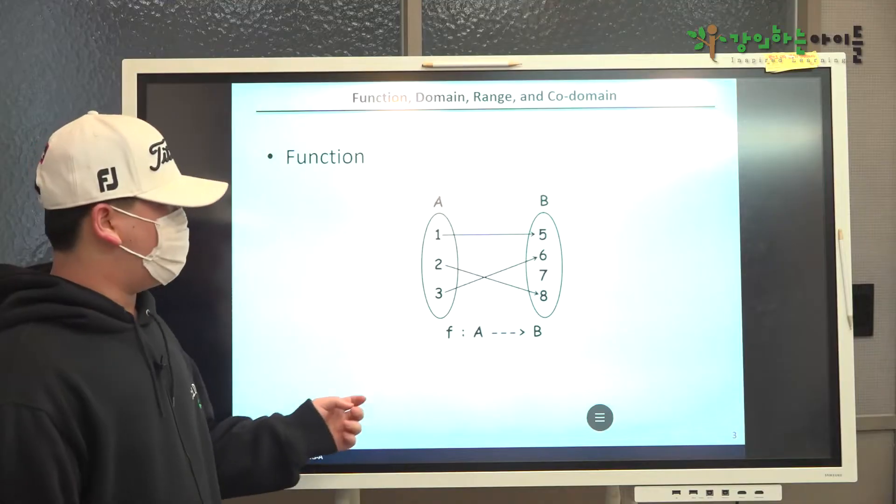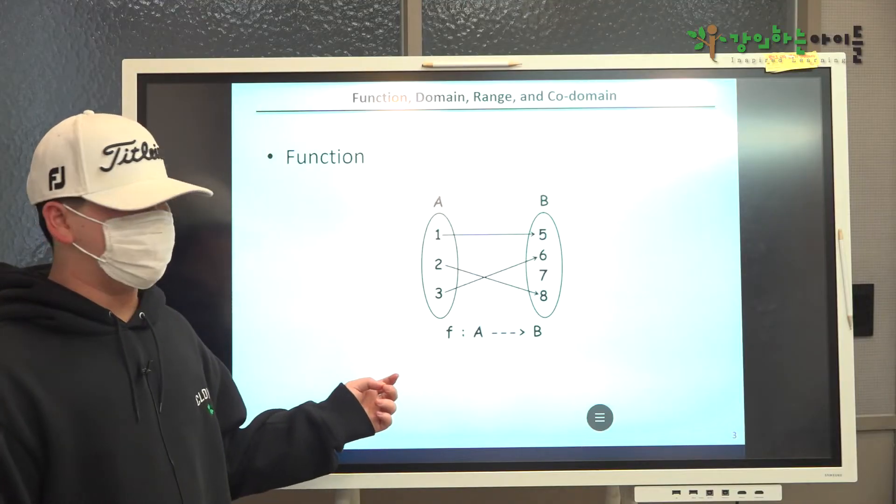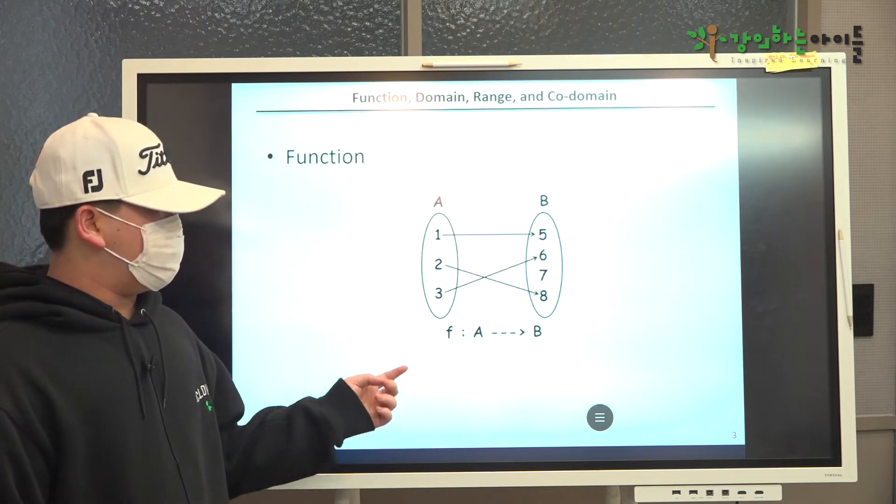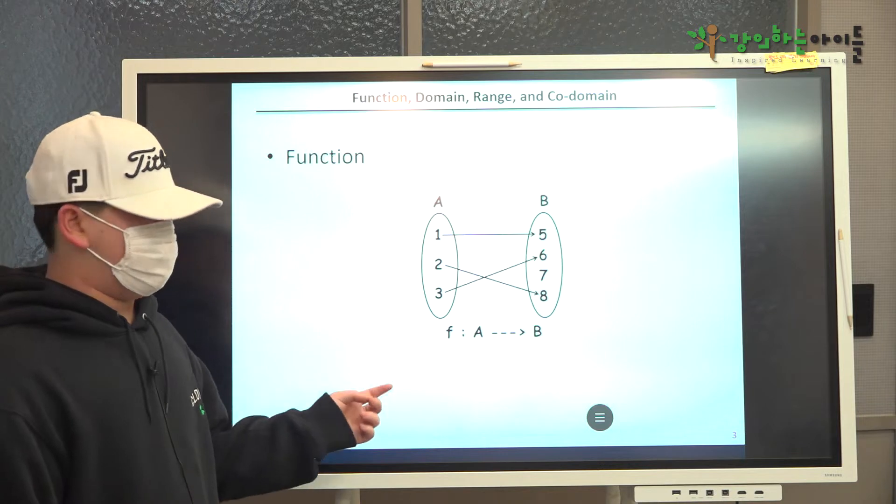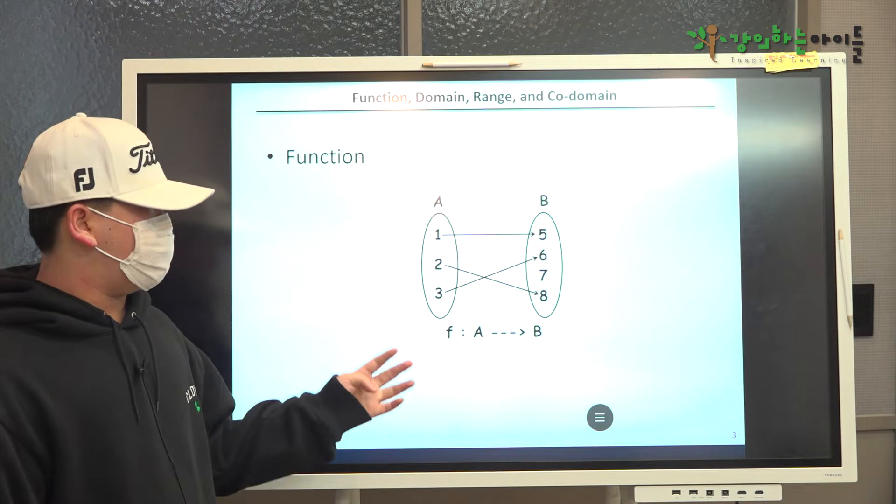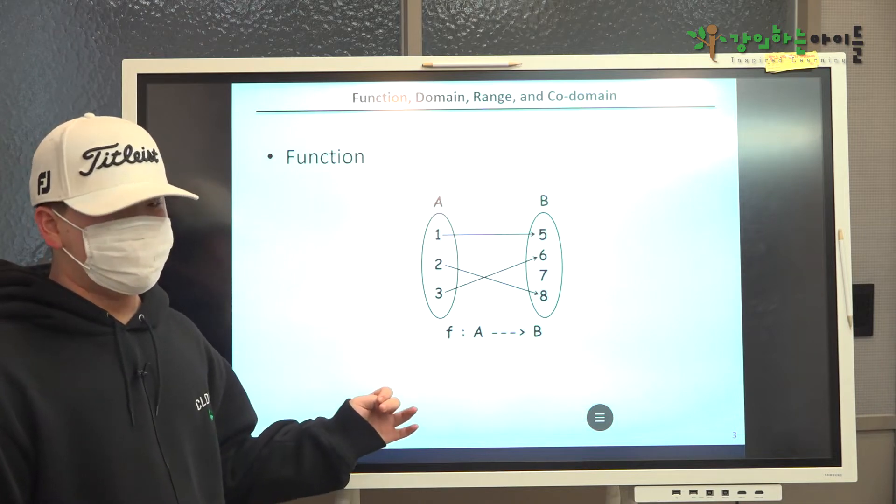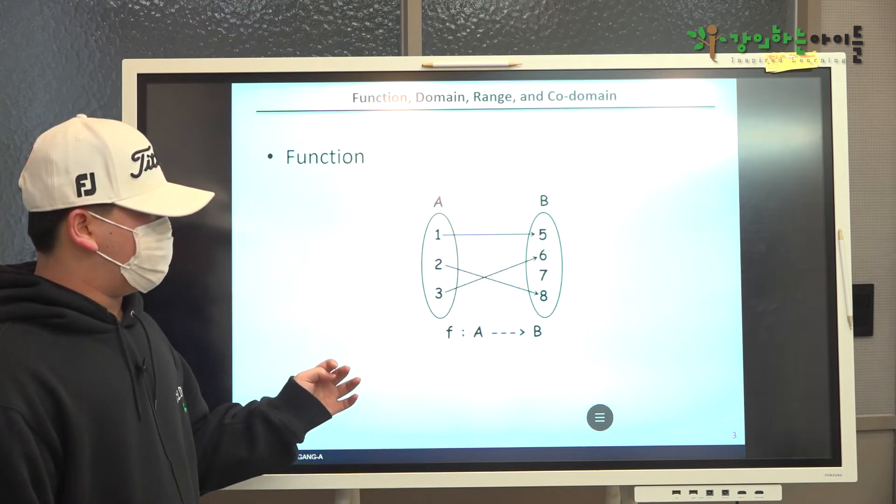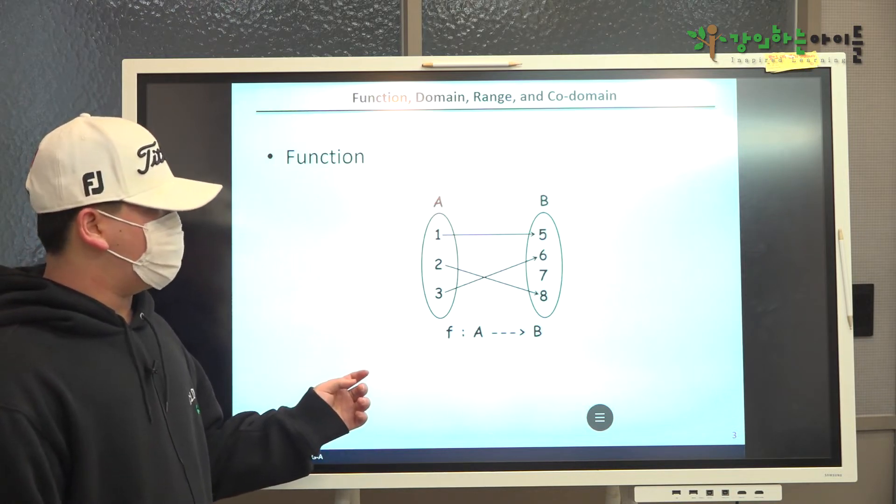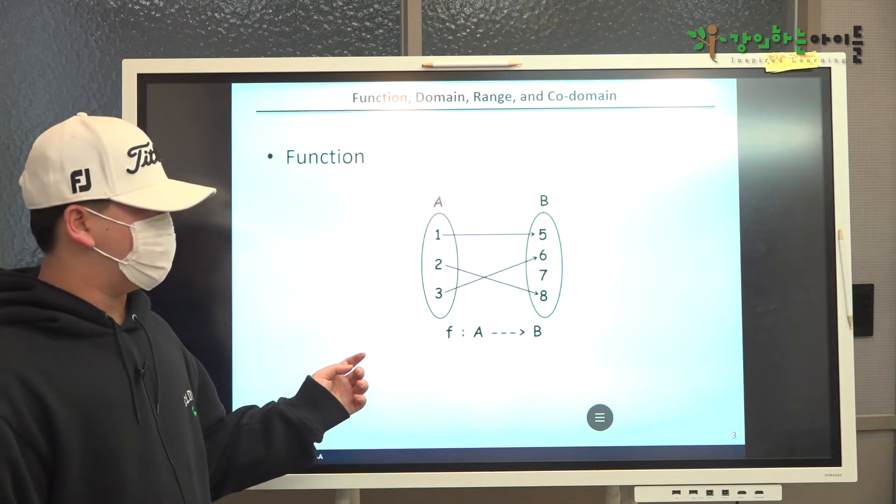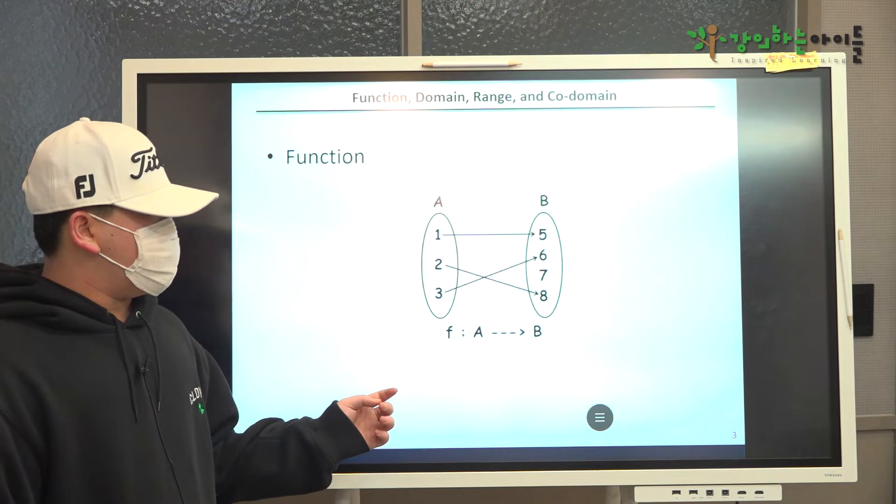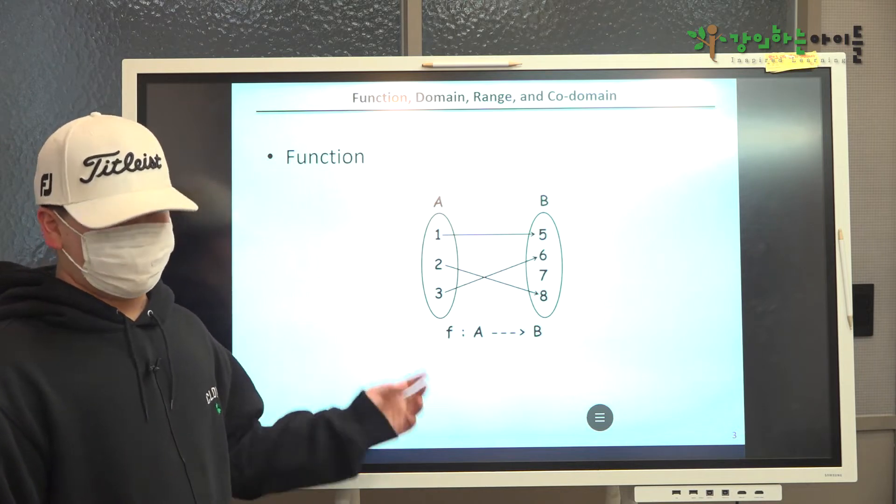A function is a relation from a set of input values to a possible set of output values, where each input is related to exactly one output. A function consists of three components: domain, codomain, and range. The domain of a function is the set of possible input values, and the codomain of a function is what may possibly come out of a function, and the range of a function is what actually comes out of a function.